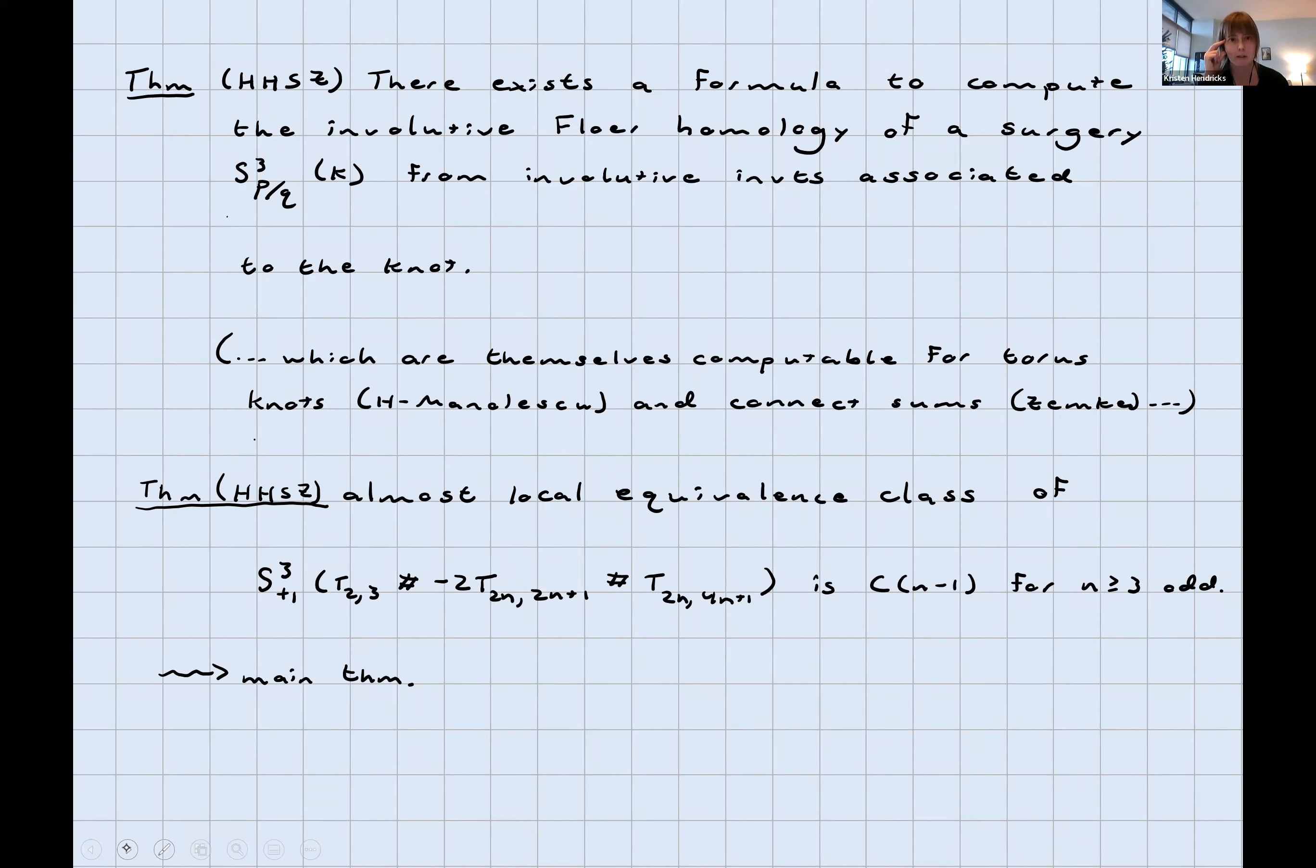The theorem is that there's a formula for computing the involutive Floer homology of surgeries from invariants associated to the knot. This is in parallel to Ozsváth and Szabó giving a formula for computing the Heegaard Floer homology of three manifolds from surgeries from Heegaard Floer invariants associated to the knot. This is an elaboration of that. You might say, does this make things any better? How computable are the involutive invariants associated to knots? The answer is meh, but however, they're easy to compute for torus knots. That's due to me and Ciprian. And there's a nice formula for computing them for connect sums. That's due to Ian.